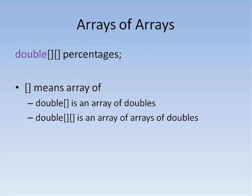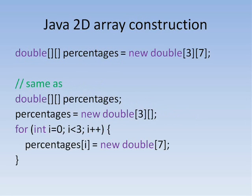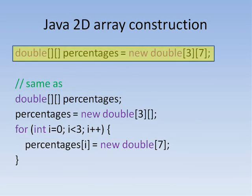So, declaring double bracket bracket bracket bracket means that we have an array of arrays of doubles. As with normal arrays, we don't actually have an array until we call a constructor. Here, we are making an array with three rows and seven columns.